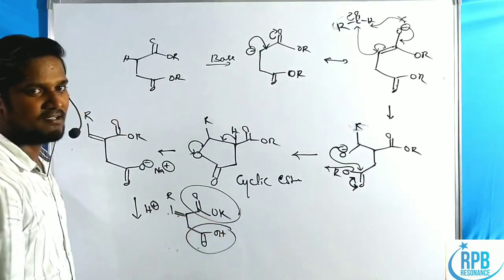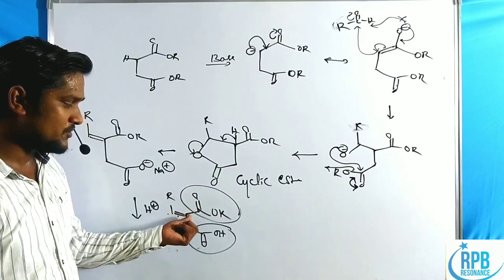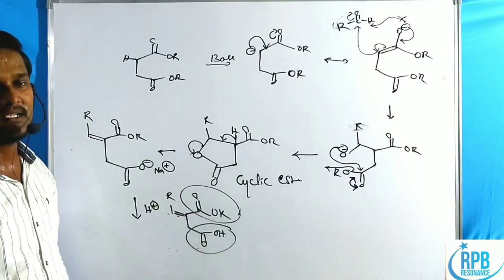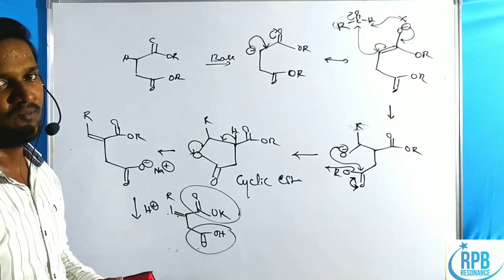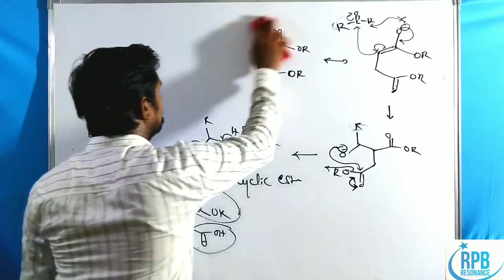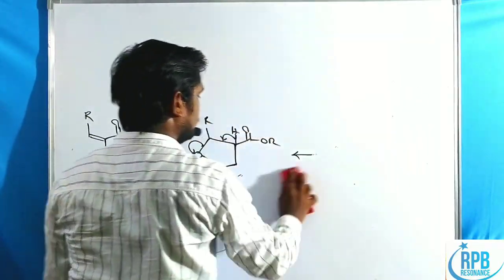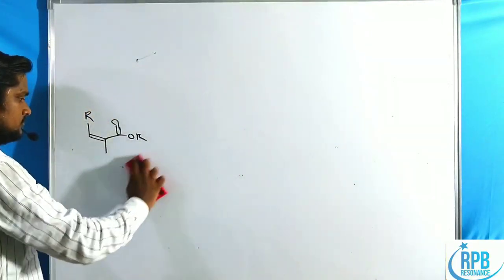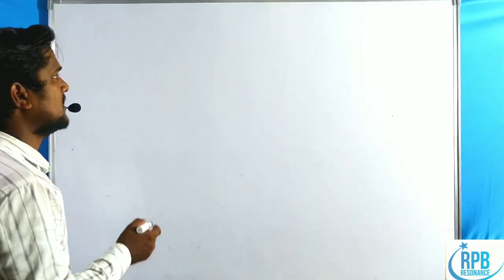This forms the alpha-beta unsaturated carbonyl compound — specifically an alpha-beta unsaturated half-ester, not a complete diester. The other part becomes carboxylic acid. This is the simplest mechanism of Stobbe condensation. Now we will discuss one of the applications of Stobbe condensation.